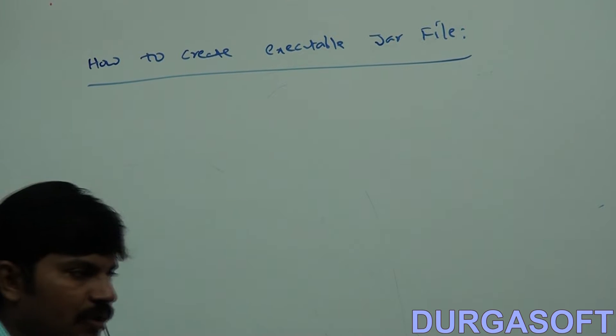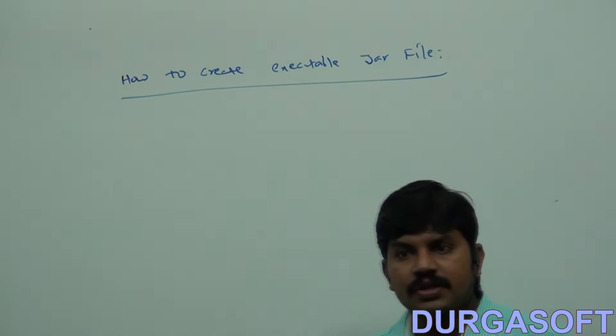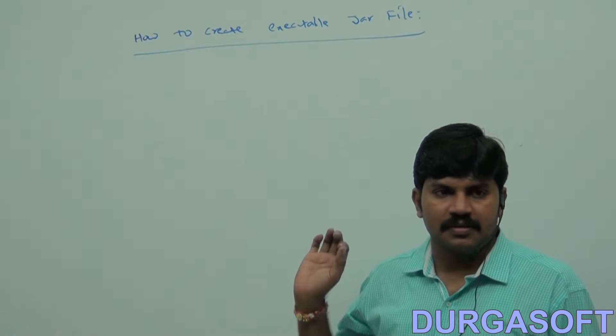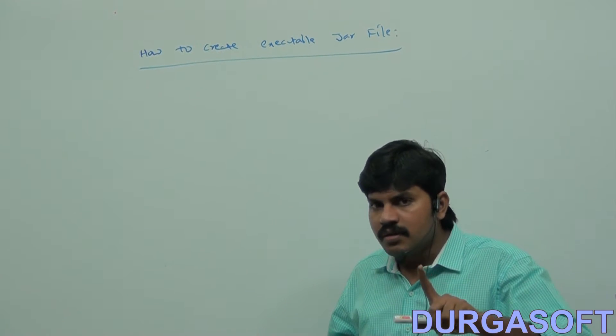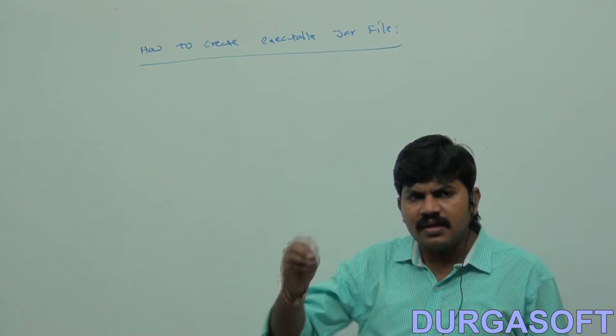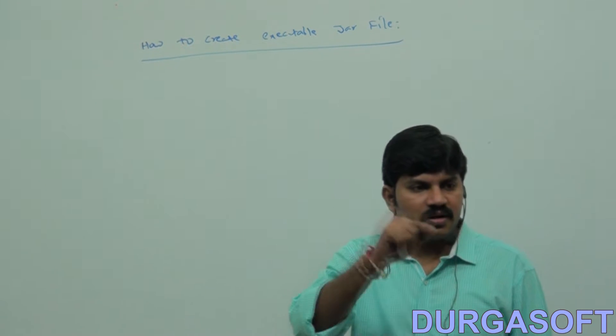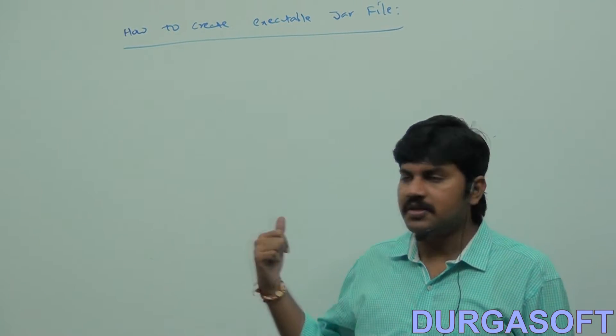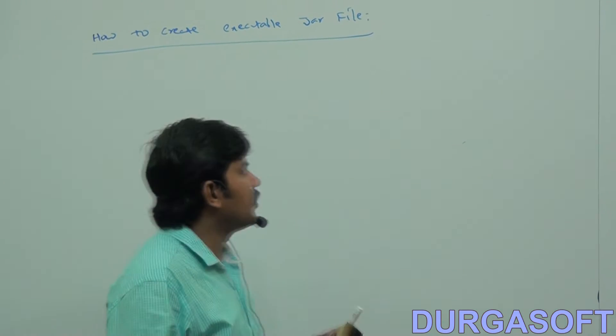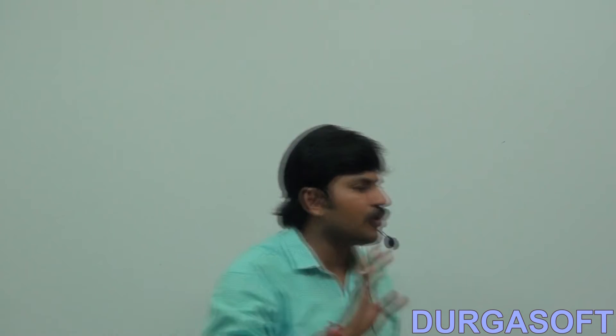How to create an executable JAR file — this is an important and compulsory topic you should have clear clarity on. We know what a JAR is: a group of dot class files. I want to run a JAR from the command prompt — java durgacalc.jar. How can I create an executable JAR file? Let me run a class normally, compile it, create an equivalent JAR file, and then try to run that JAR from the command prompt.